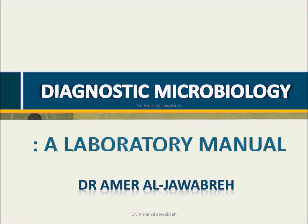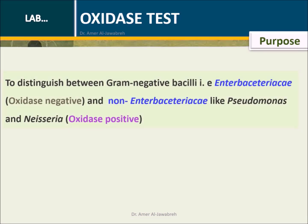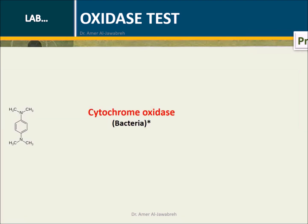Diagnostic Microbiology, a Laboratory Manual. Oxidase Test. Purpose: To distinguish between gram-negative bacilli, i.e. Enterobacteriaceae, which are oxidase negative, and non-Enterobacteriaceae, like Pseudomonas and Neisseria, which are oxidase positive.